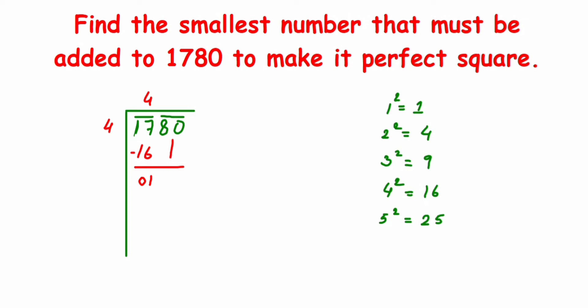Now to find this, I have to find the divisor, and how to do that? Take the double of the quotient. Here the quotient is 4, so double of 4 is 8.